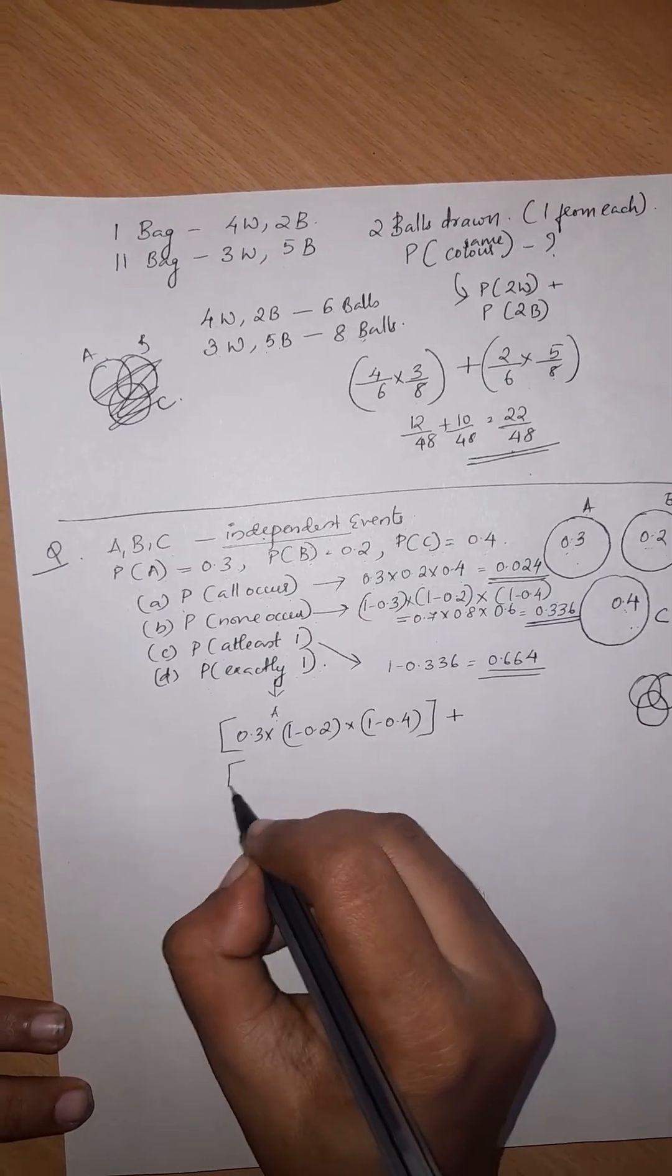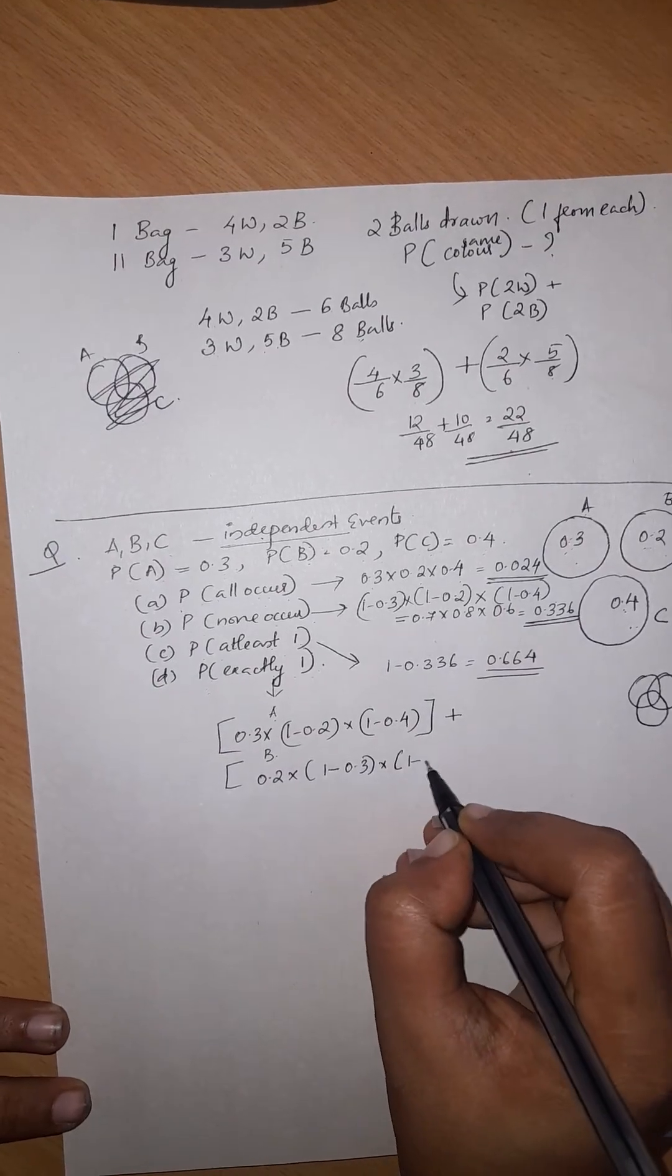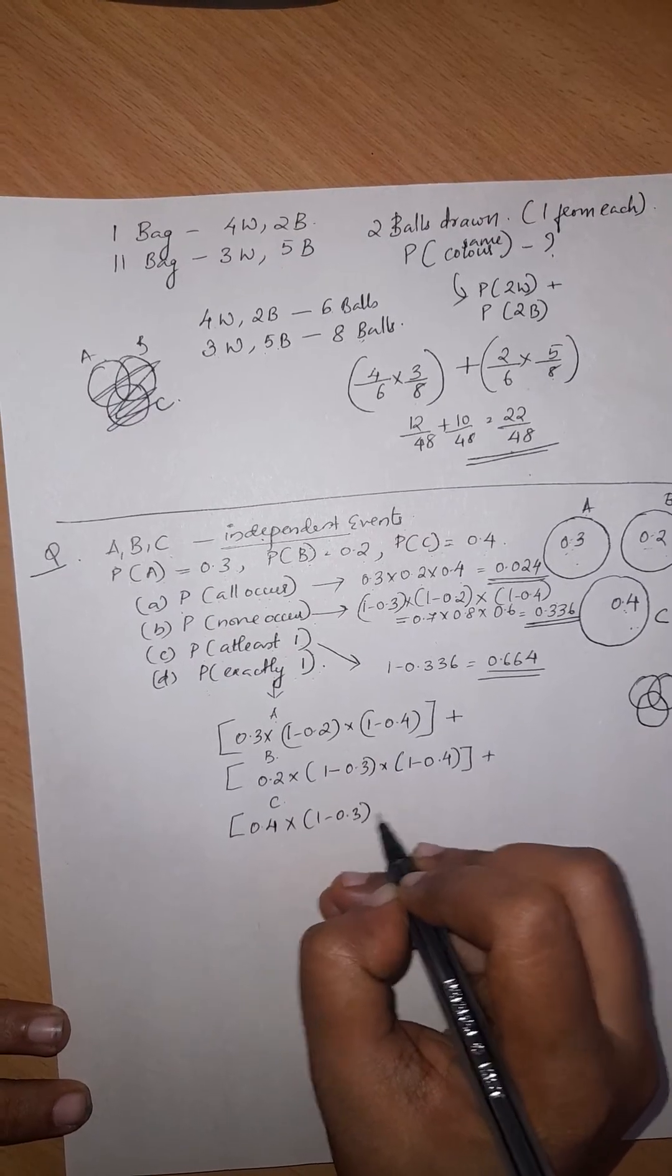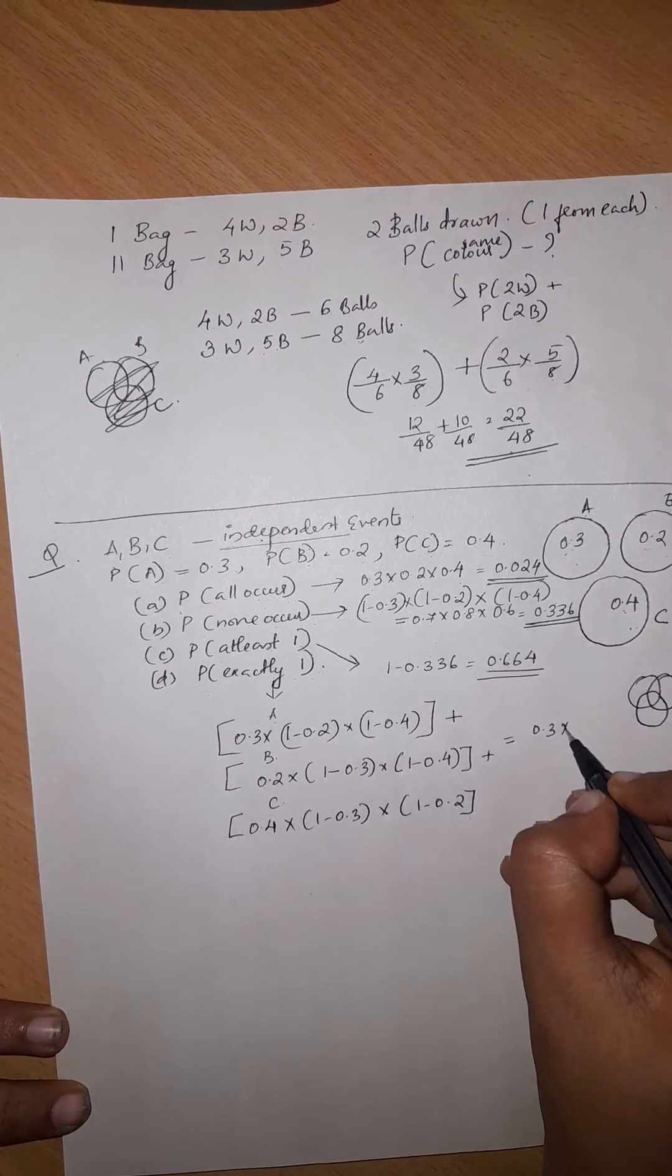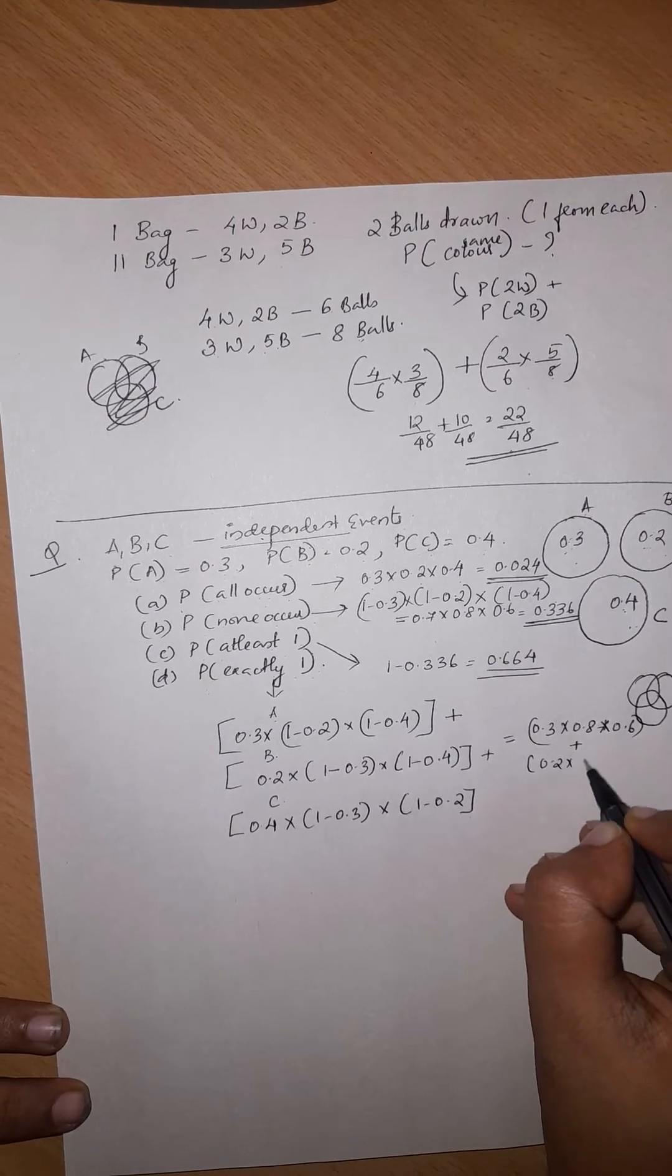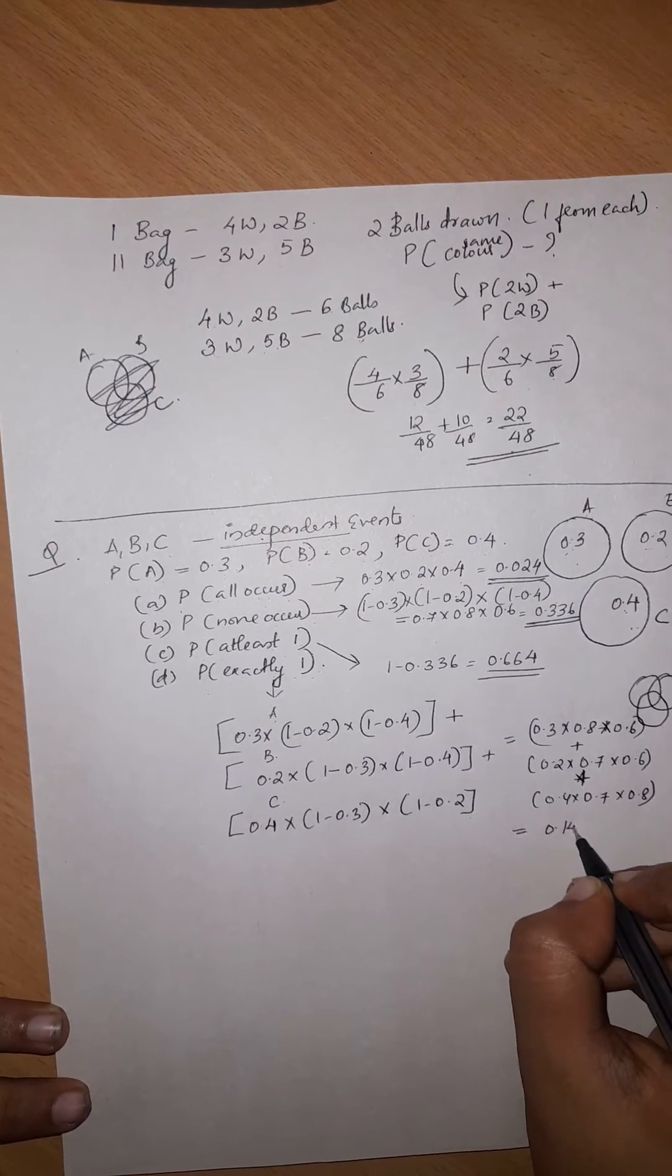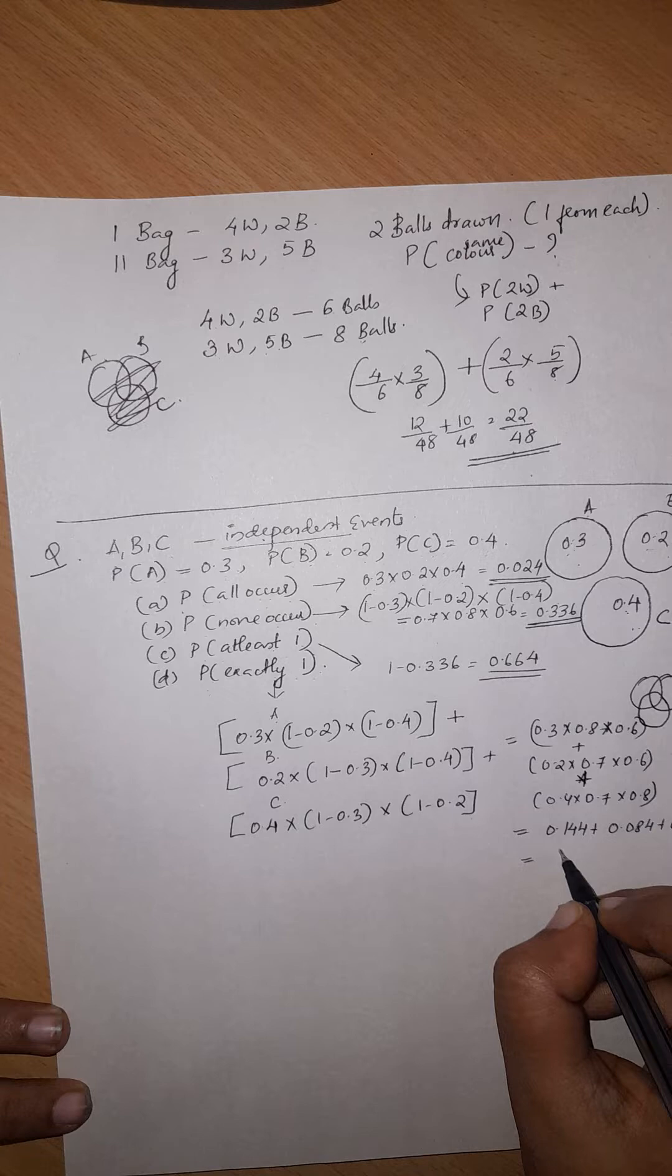Plus if B occurs: 1 minus 0.3, 0.2, 1 minus 0.4. Plus C occurs: 1 minus 0.3, 1 minus 0.2, 0.4. So this is the values we will calculate, 0.3 into 0.8 into 0.6 plus 0.7 into 0.2 into 0.6 plus 0.7 into 0.8 into 0.4. So, this is the value of 0.144 plus 0.084 plus 0.224, so that is equal to 0.452.